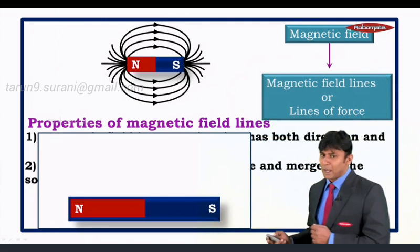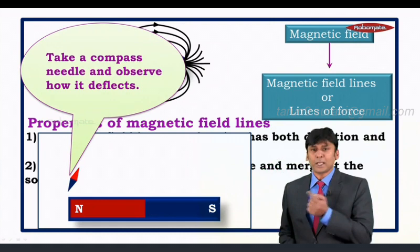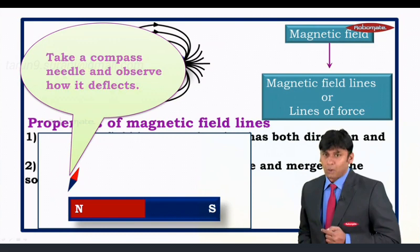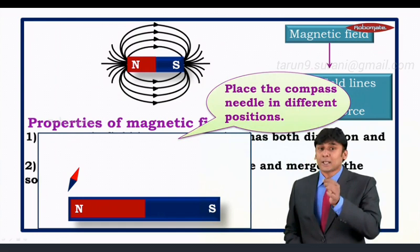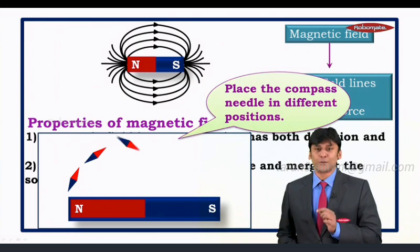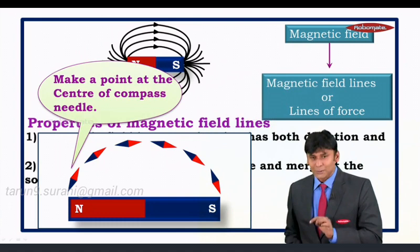To demonstrate this, take a bar magnet and place a compass needle in its magnetic field. Observe how the needle deflects — the direction in which the north pole of the needle moves is the direction of the field. Next, place the compass needle in different positions and each time observe where it comes to rest. Mark a point at the center of the compass needle each time.